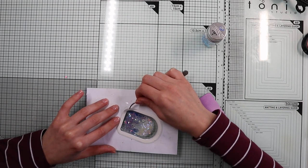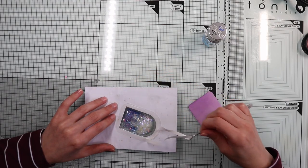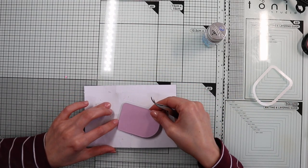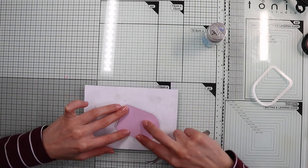I remove the protective film of the adhesive located on the back of the blister and I close the area with the ice cream base.